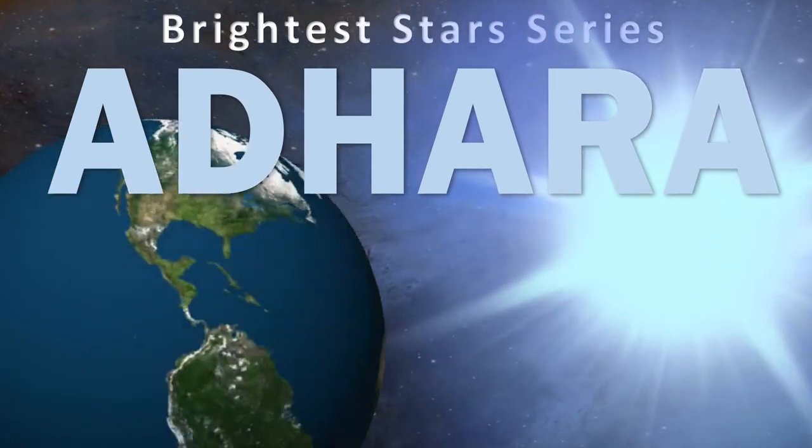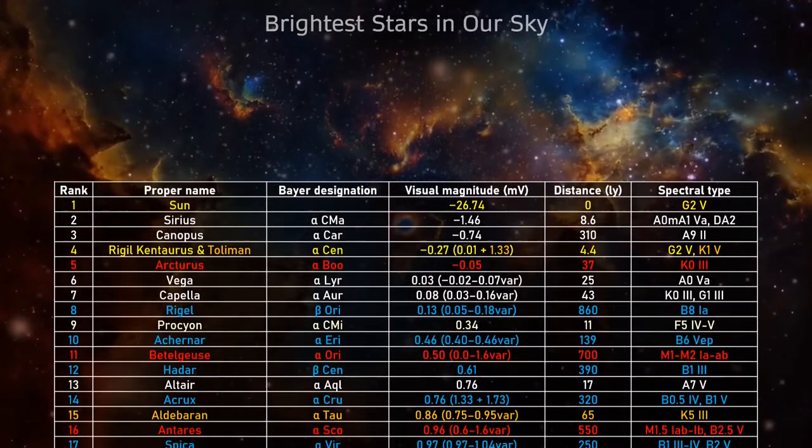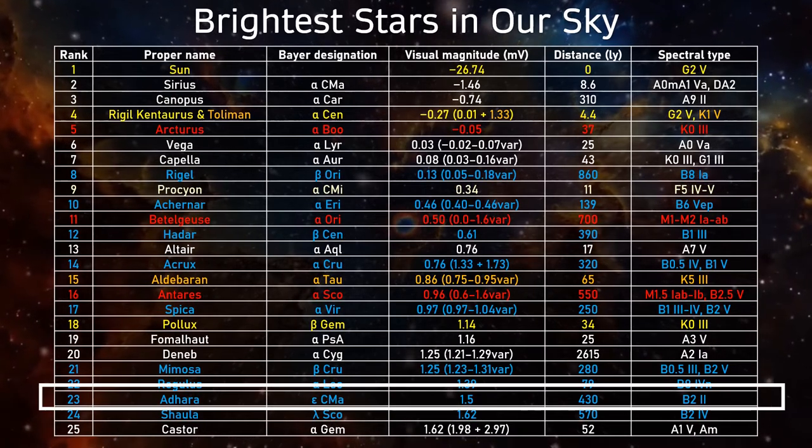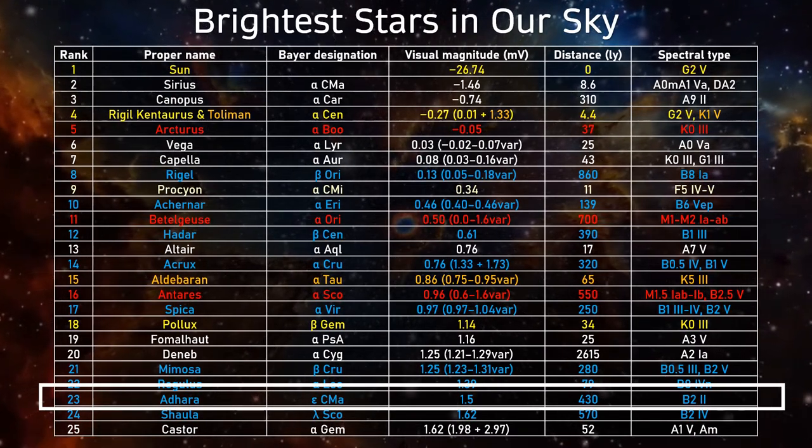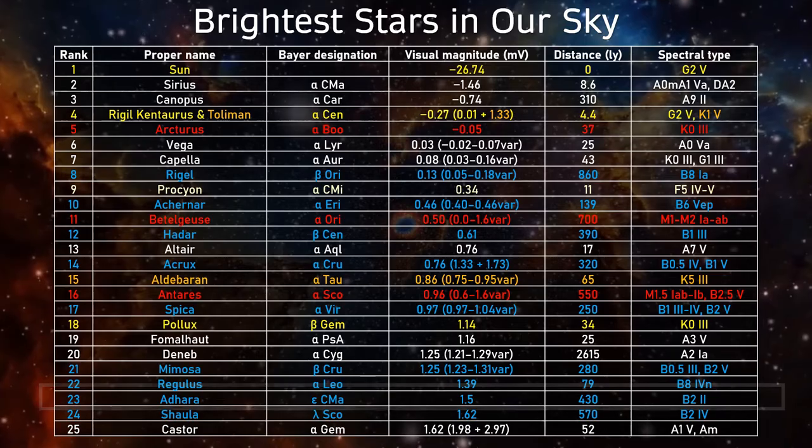So, let's get to it. Adhara shines at plus 1.5 apparent magnitude. It's actually a binary star, but the light of the primary star is so bright that it overwhelms the companion in small telescopes. It ranks a relatively unremarkable 23rd on the brightest stars list, in between Regulus and Shaula from Cassiopeia.